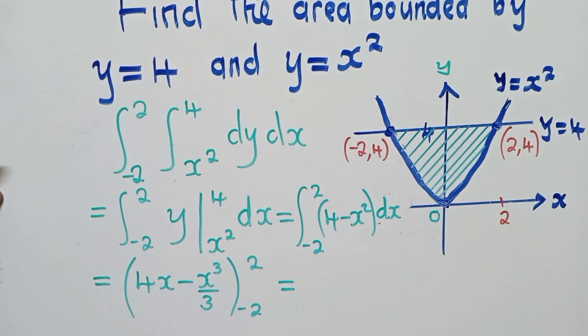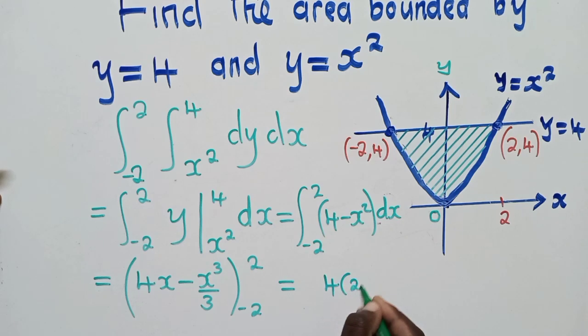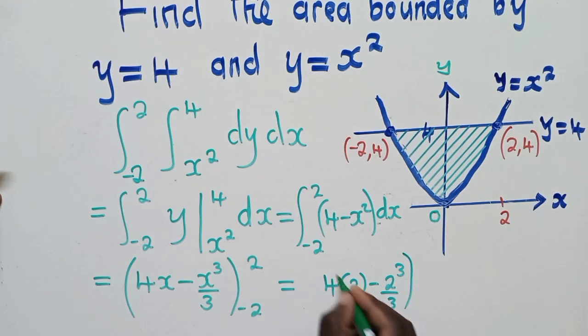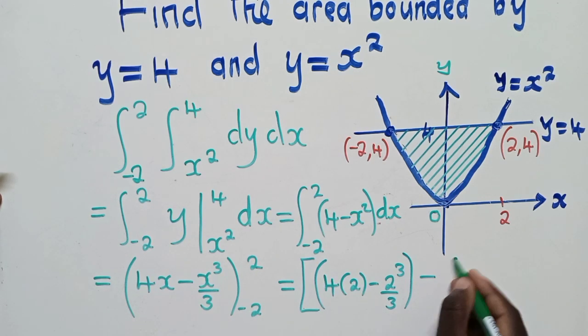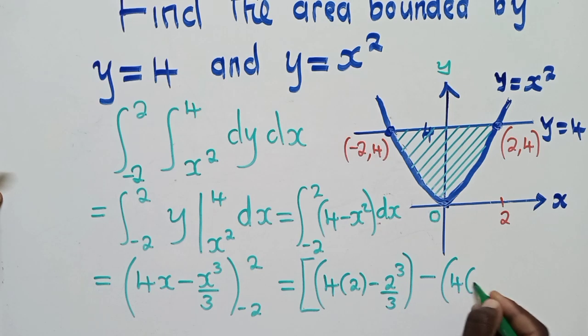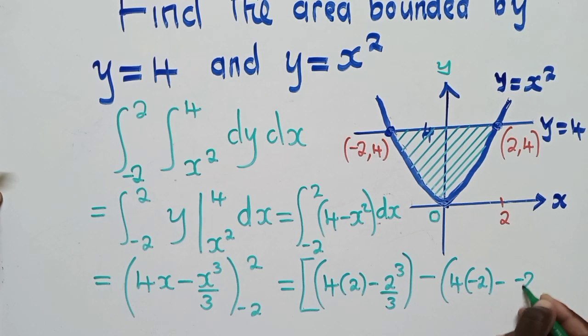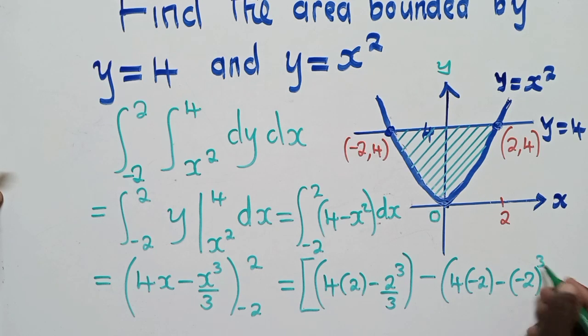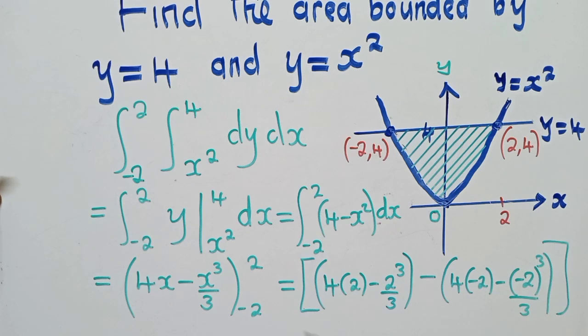We now substitute. So we substitute this 2 right here and here. So we should have something like this, 4 times 2 there, minus here, 2 power 3 over 3. So we close this one. Then we say minus. We come to the lower limit, we substitute also. It will be 4 times negative 2 there, minus negative 2 power 3 over 3. Then we close. We also close like that.